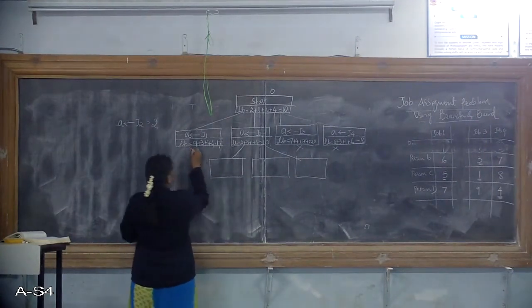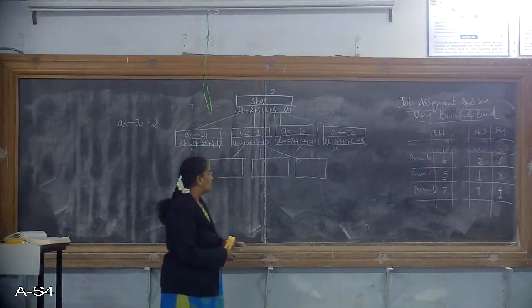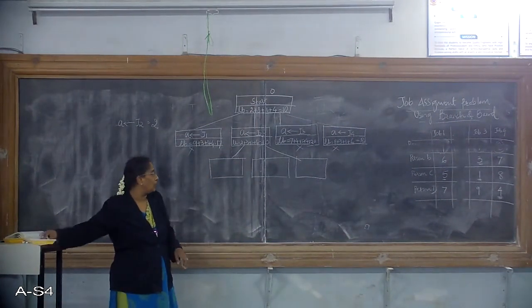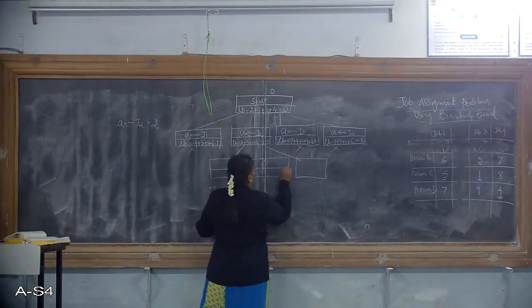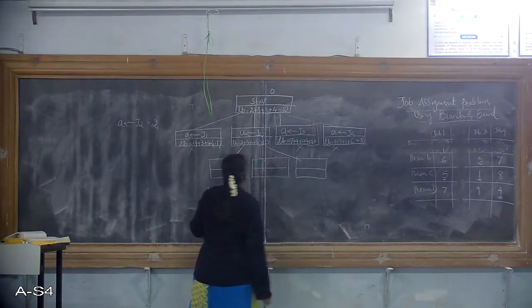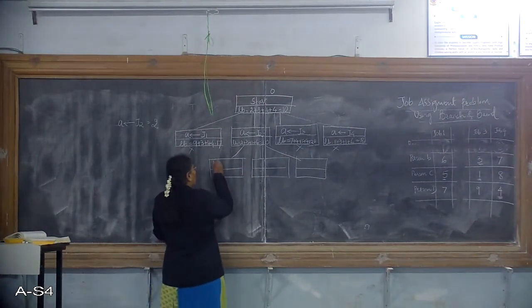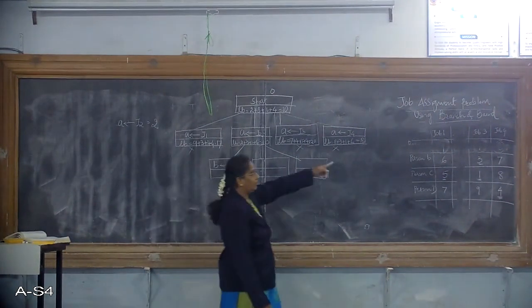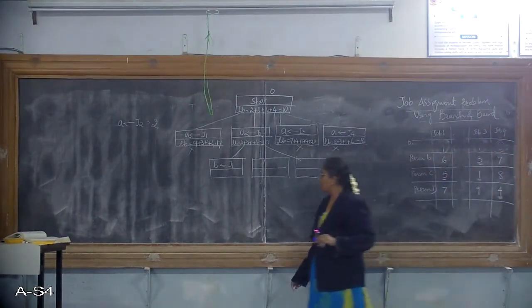The promising node is only one here, which has given the least cost lower bound value. The other three are non-promising nodes. For person B, after removing J2, only J1, J3, and J4 remain as options.